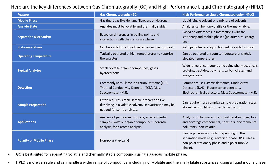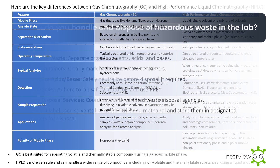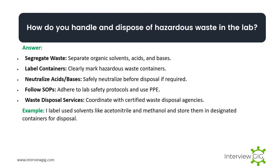In summary, GC is best suited for separating volatile and thermally stable compounds using a gaseous mobile phase, while HPLC is more versatile and can handle a wider range of compounds including non-volatile and thermally labile substances using a liquid mobile phase.